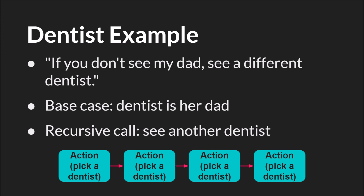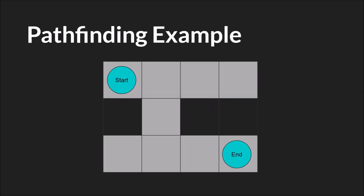I want to talk about one slightly more real-world example: pathfinding. Recursive function calls are often used for pathfinding, which is something you really want in many games. In a simple maze, the robot starts here and wants to move right. If it can't move right, it moves down. If it can't move down, it moves left. If it can't move left, it moves up. If none of those places are new, it backtracks. The base case is that it's reached the end. Following those basic rules, the robot can make it through the maze.